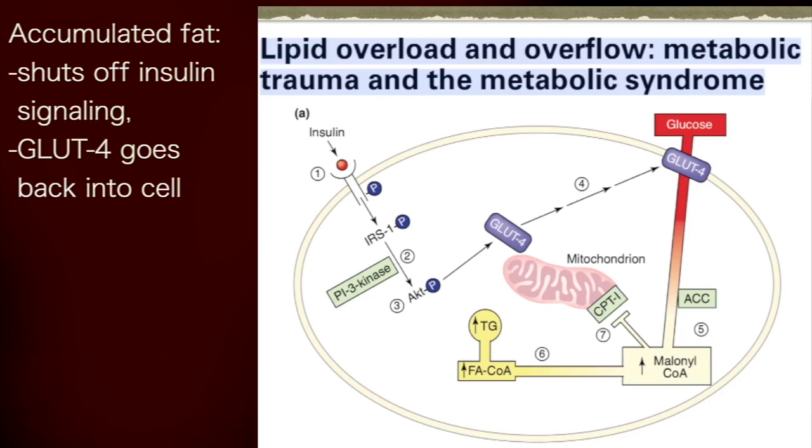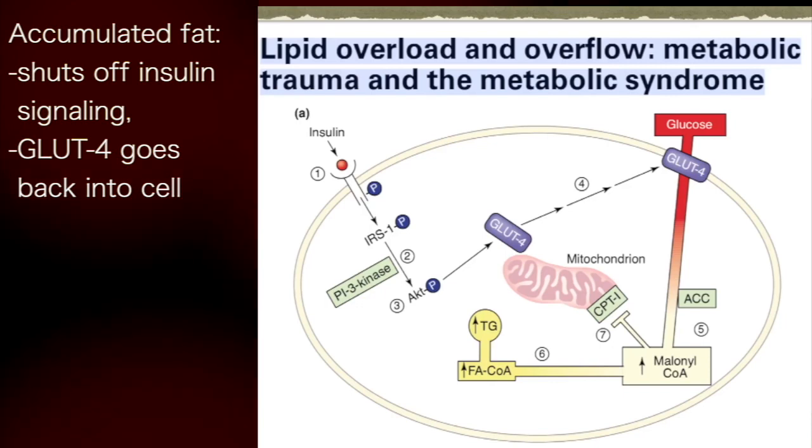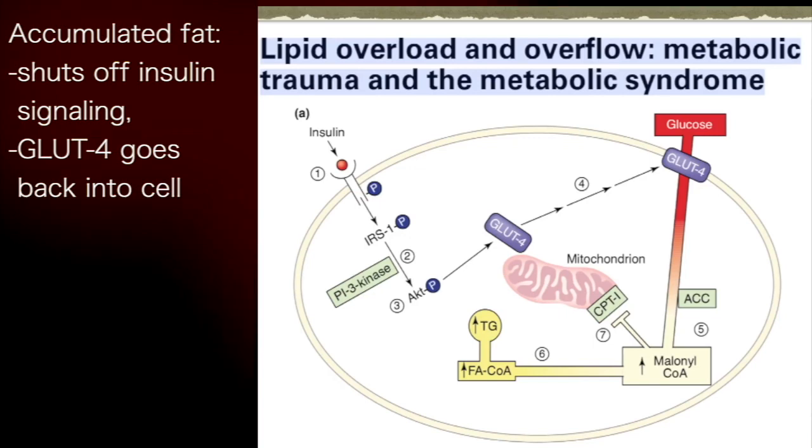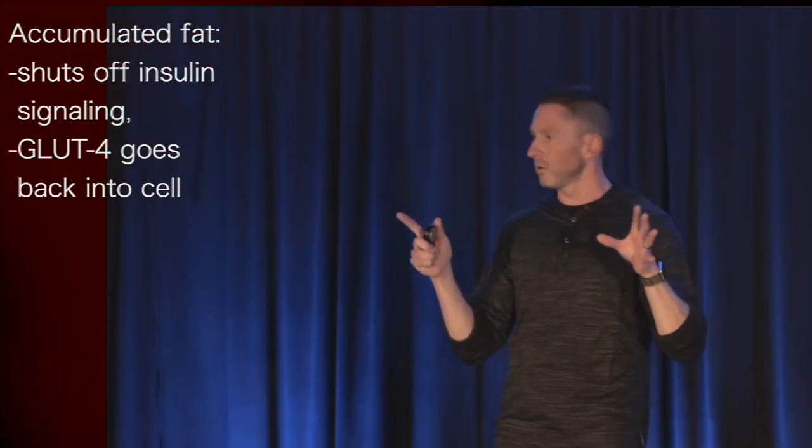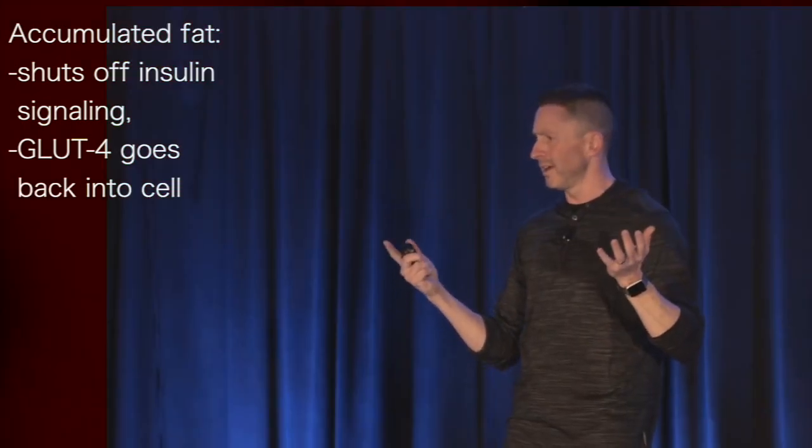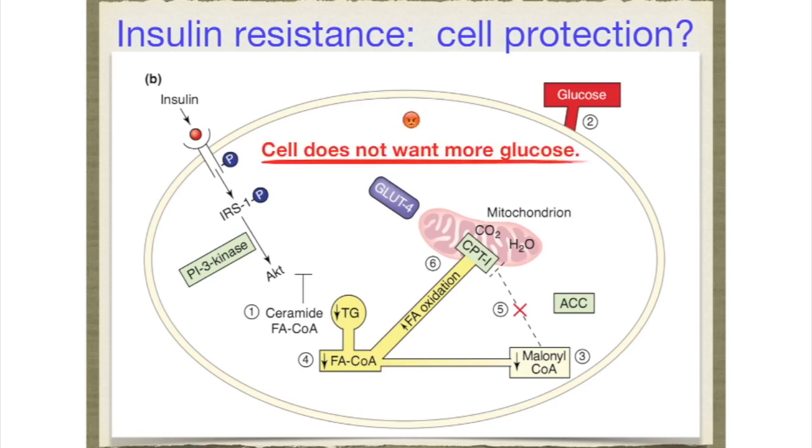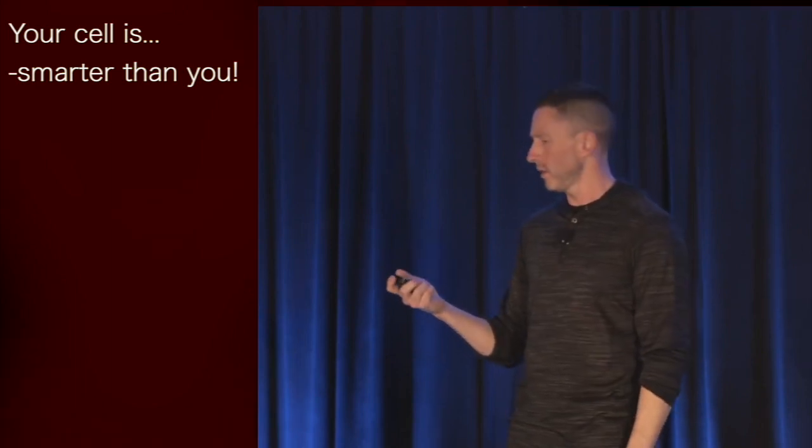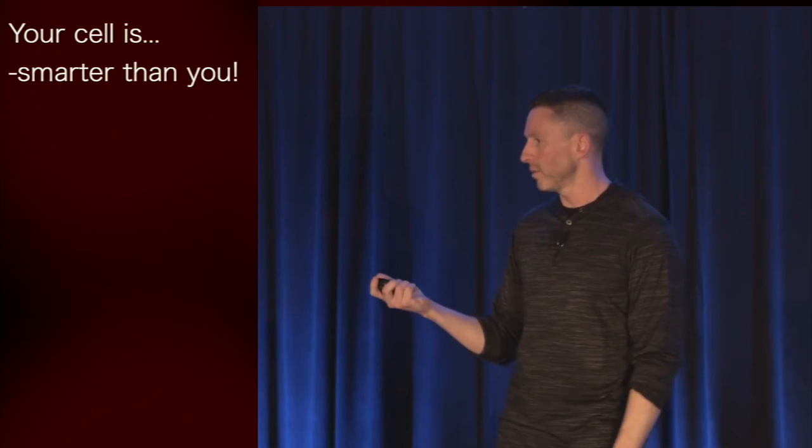And in fact, what happens is your cell sees what's going on here. All this fat is accumulating. And the accumulated fat shuts off insulin signaling. So the GLUT4 transporter goes back inside the cell. And your cell is refusing glucose. Your cell doesn't want any more glucose. Look at all this fat that accumulated. Your cell doesn't want glucose. Your cell is smarter than you are. What could you do with your diet when your cell doesn't want more glucose?